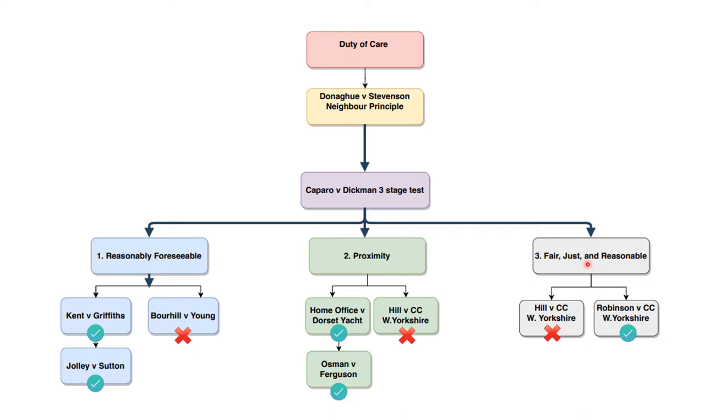So it must be reasonably foreseeable. There must be sufficient proximity between the parties, and it must be fair, just and reasonable in all the circumstances to impose the duty. The first two tests, reasonably foreseeable and proximity, actually come from the wording of the neighbor test from Lord Atkin. The third one, fair, just and reasonable, is also referred to as a public policy test. Some people say it's a bit like a safety valve for judicial discretion. So it's just a way of the courts limiting liability in particular areas on the grounds of public policy.